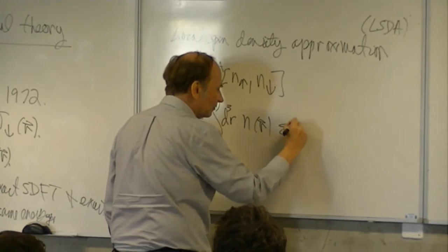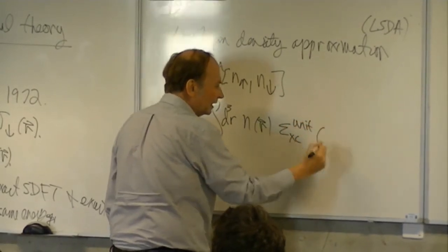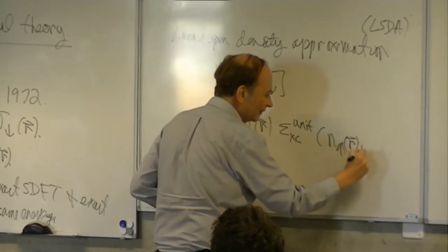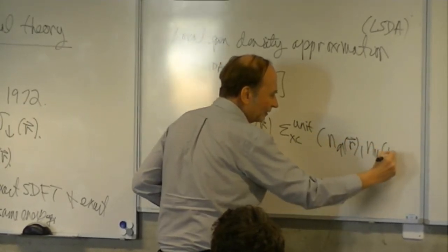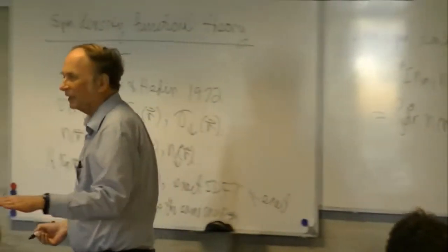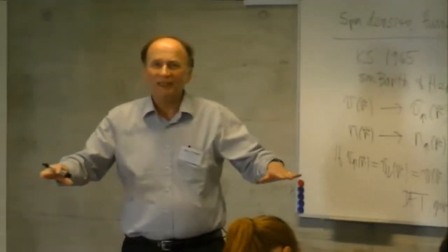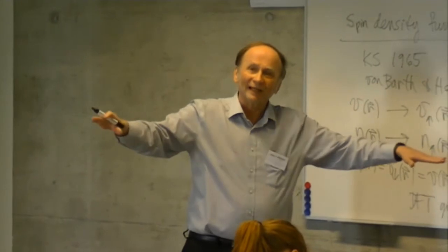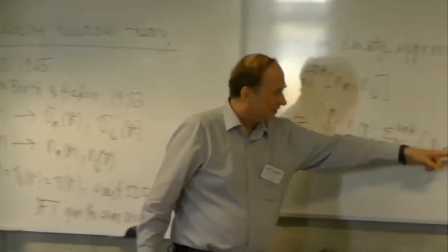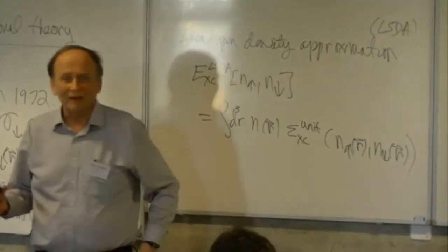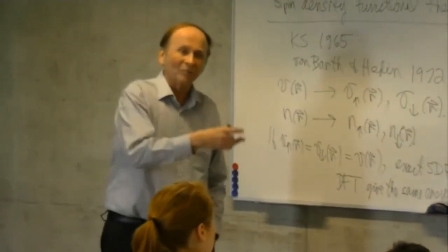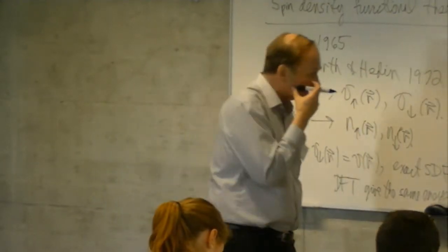Going with spin density functional theory gives us the local spin density approximation, LSDA. The exchange-correlation energy is a functional of the up and down spin densities, given by an integral over three-dimensional space of the electron density times epsilon-XC of the uniform gas, which now depends on both the up and down spin densities at point R. The inputs come from a uniform electron gas with a uniform up-spin density and a different uniform down-spin density, provided by calculations such as those of von Barth and Hedin.